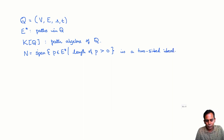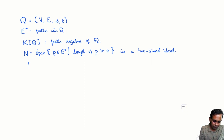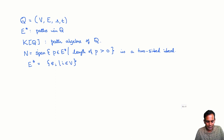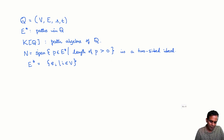Now let N be the span of all paths P in E* such that the length of P is positive. Then N is a two-sided ideal. In Q there are two kinds of paths: the trivial paths e_i for i in V (paths of length 0 that stay at vertex i), and paths of positive length.